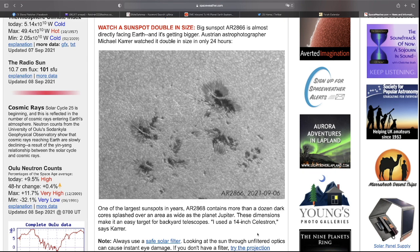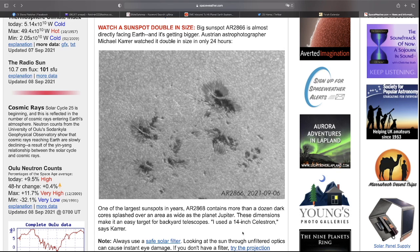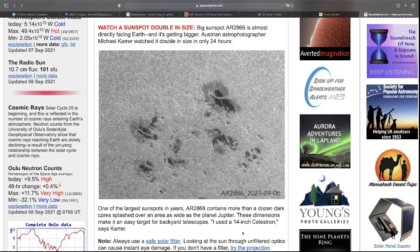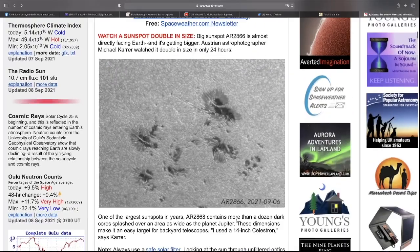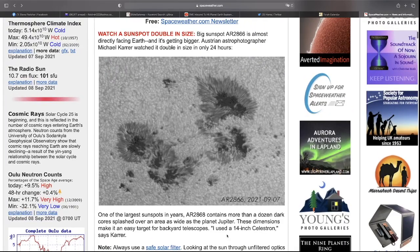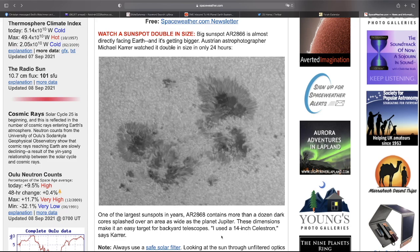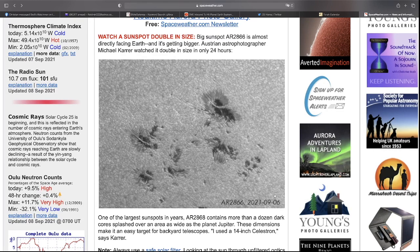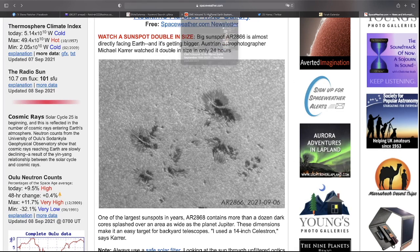It goes on to say, one of the largest sunspots in years, AR-2868 contains more than a dozen dark cores over an area as wide as the planet Jupiter. So between 2866 and 2868, huge sunspots that are rapidly growing on the face of the sun.